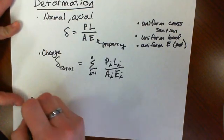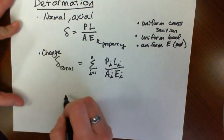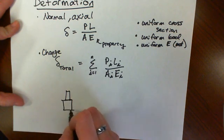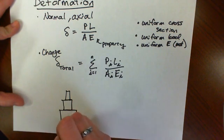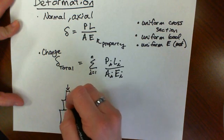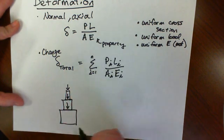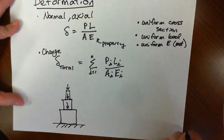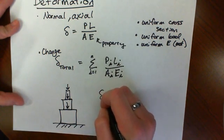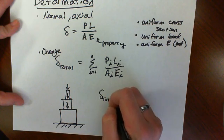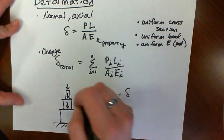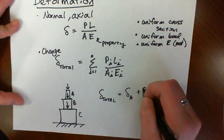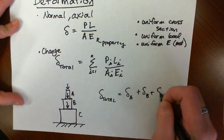Now we talked about what happens when we have a complex member with multiple loads. Here we have multiple cross-sections and multiple loads, so we can easily just do delta total equals delta A plus delta B plus delta C.